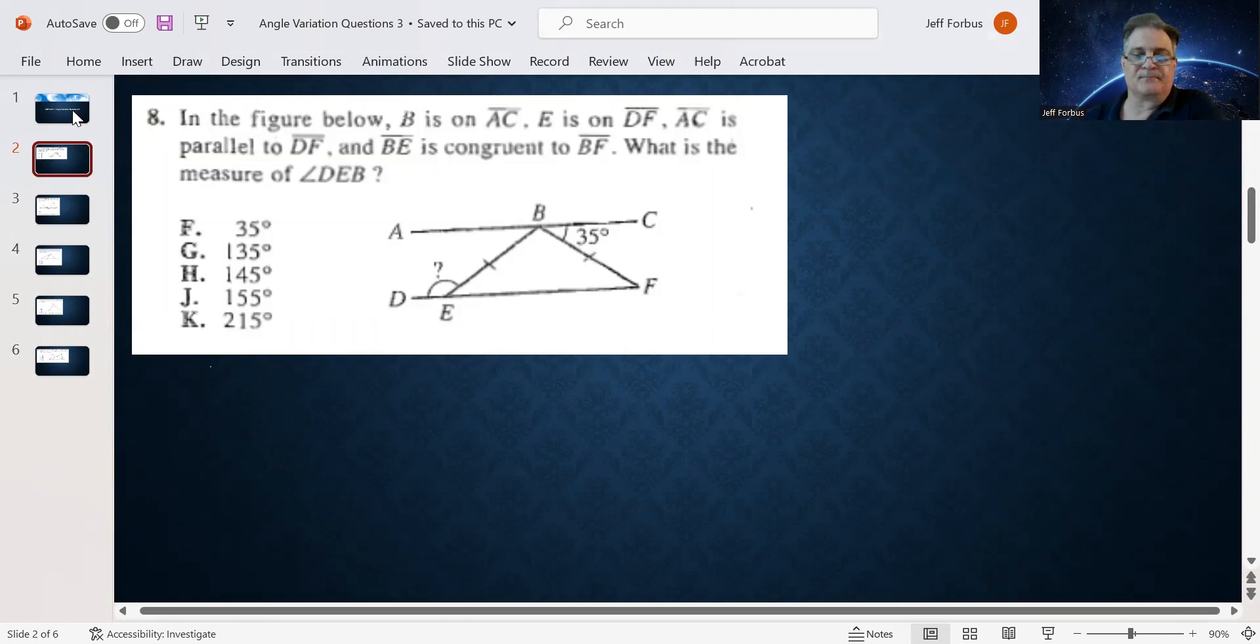Our first question wants to know what is the measure of angle DEB? So we're looking for angle E outside of the triangle. They give us some good information. We know that B is on AC and E is on DF and AC is parallel to DF. And BE is congruent to BF. That's really the most helpful. That means we've got a special type of triangle here where angles E and F are going to be the same.